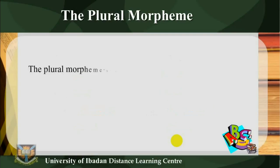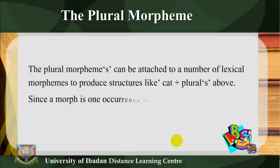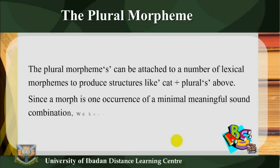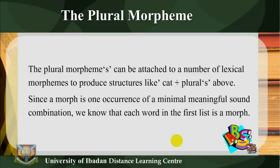The plural morpheme S can be attached to a number of lexical morphemes to produce structures like cat plus plural S. Since a morph is one occurrence of a minimal meaningful sound combination, we know that each word in the first list is a morph.